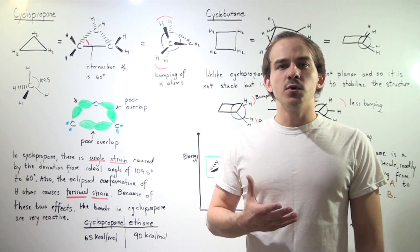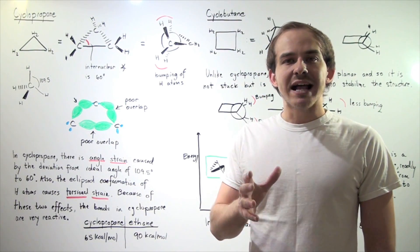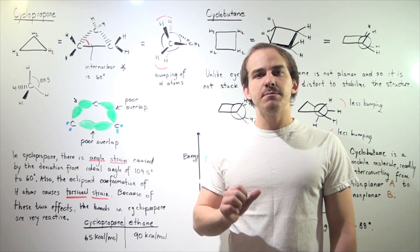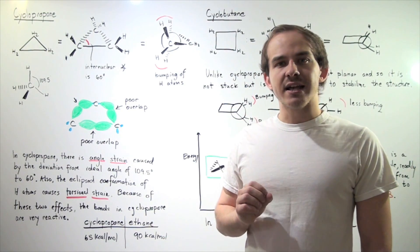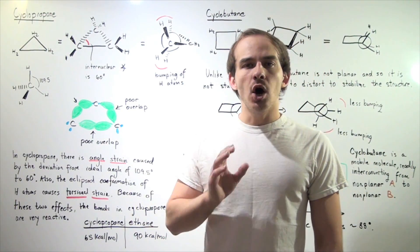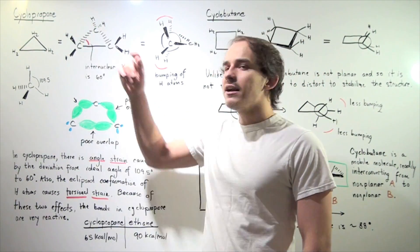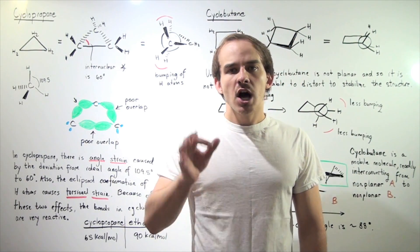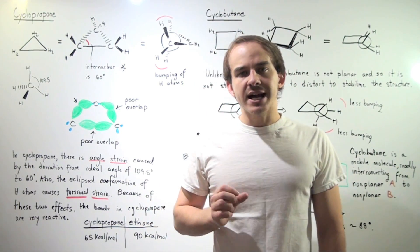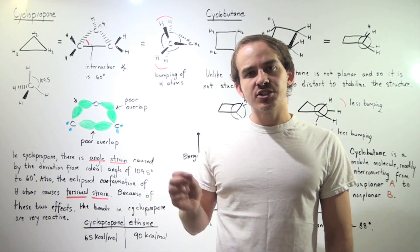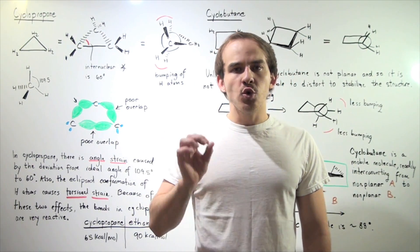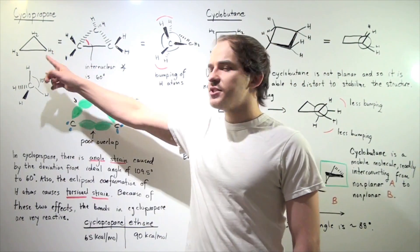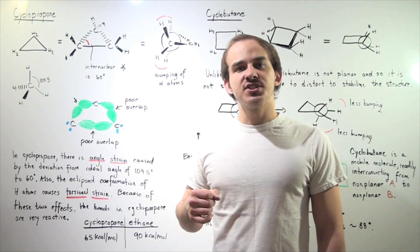In this lecture, we're going to examine cycloalkanes. Let's begin by looking at the simplest cycloalkane known as cyclopropane. Cyclopropane is composed of three carbon atoms, each attached to two H atoms, giving us a molecular formula of C3H6.